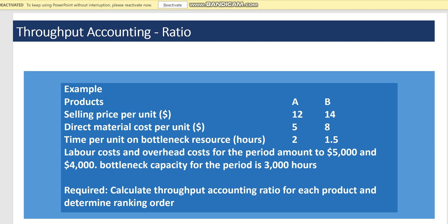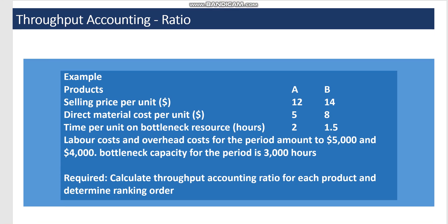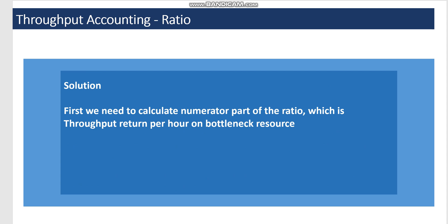Here is an example to calculate the throughput accounting ratio for two products, A and B. Selling prices and direct material costs are given. Product A takes two hours on the bottleneck resource and B takes one and a half hours. Labor costs and overhead costs for the period are five thousand and four thousand dollars respectively, and the bottleneck capacity for the period is three thousand hours.